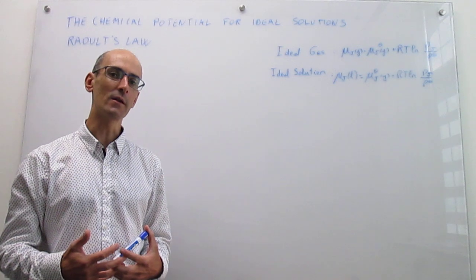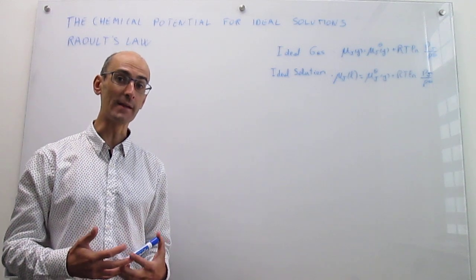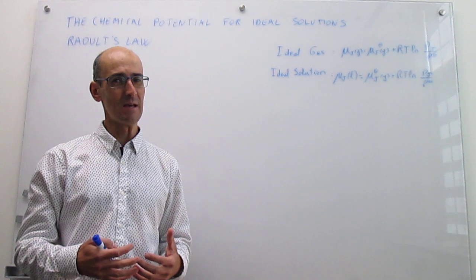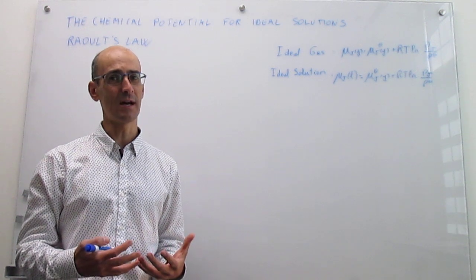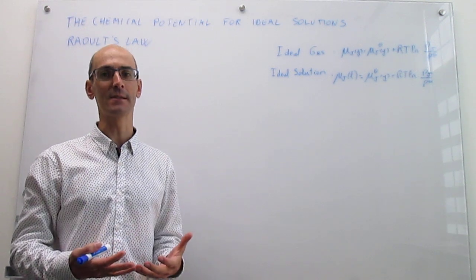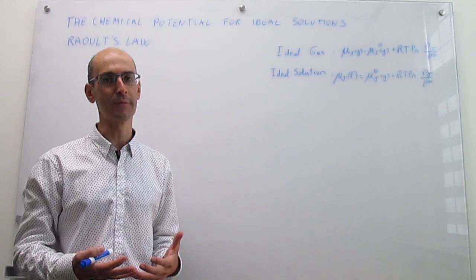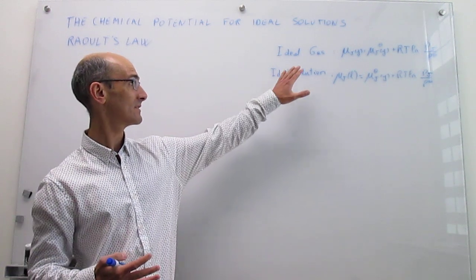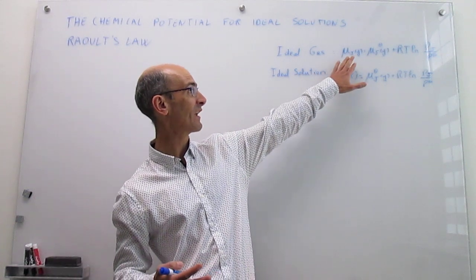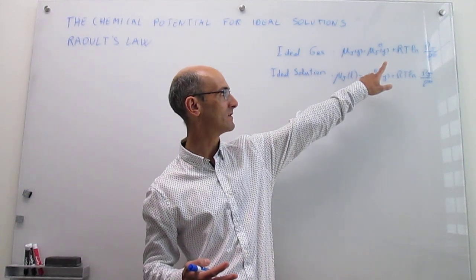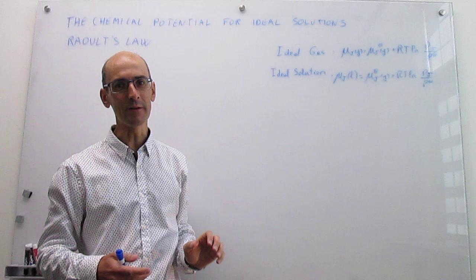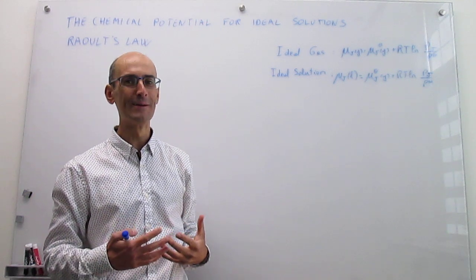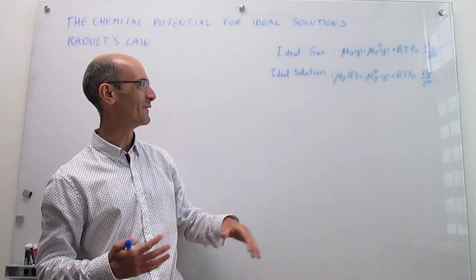In this unit we have been concentrating on trying to write the chemical potentials for species, because chemical potentials are what determine the stability of mixtures and so forth. So we know how to do that for an ideal gas — that is the expression of the variation of the chemical potential for a gas with its concentration.